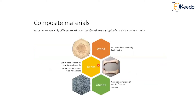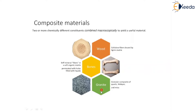In general, a composite is defined as two or more chemically different constituents combined macroscopically to yield useful materials. For example, wood consists of cellulose fibers bonded by a lignin matrix. Bones have a soft organic matrix permeated with liquid-filled holes. Granite is a composite of quartz, feldspar, and mica — all are natural composite materials.